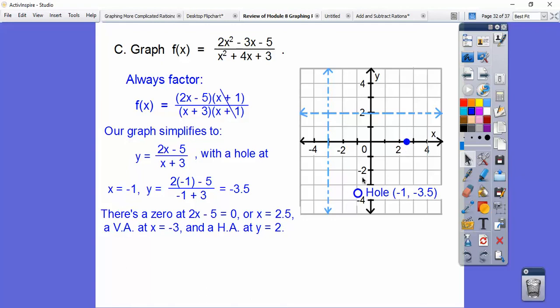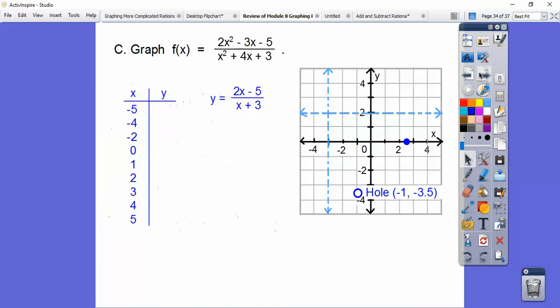Given this point right here and this hole right there, I'm pretty sure this graph is going in this direction. I don't know what's happening on this side, so I'm going to plot some points. Here we go.